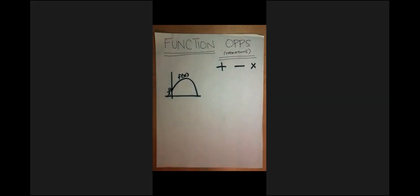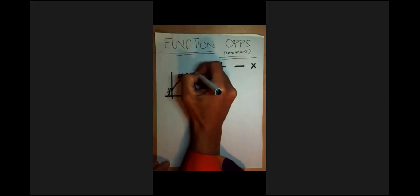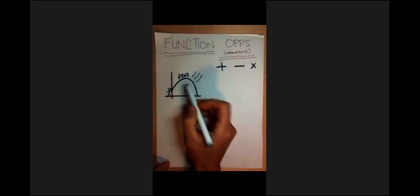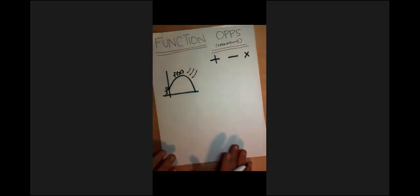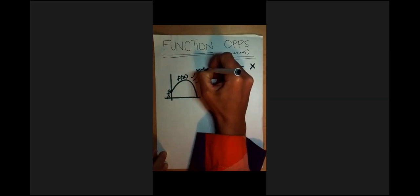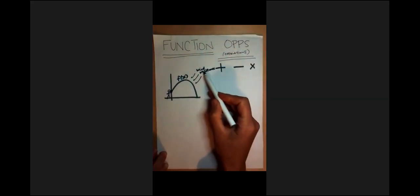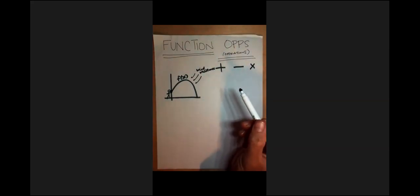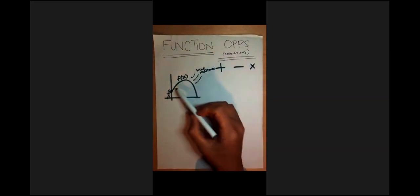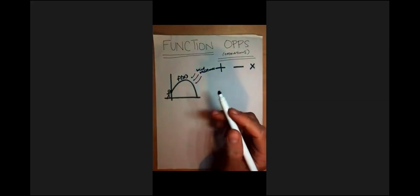So this function f of x that we have doesn't account for wind resistance. We really need some new function that incorporates this other component. Wind resistance, in this case, actually is a function - it's a function of the density of air, the velocity of the object, and the cross-sectional area of that object. So this wind resistance is itself a function.